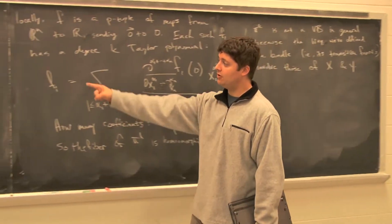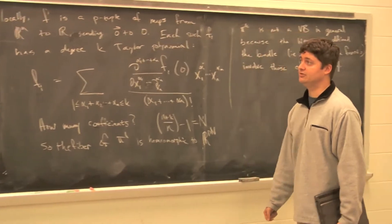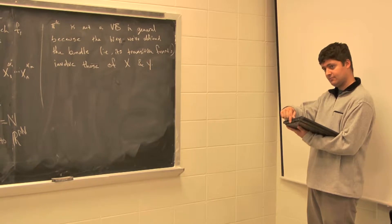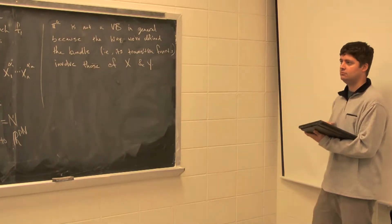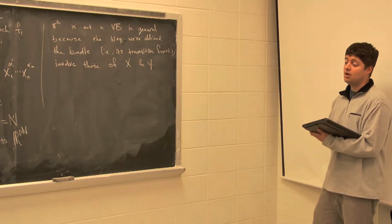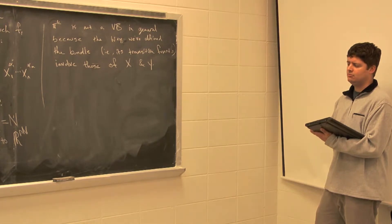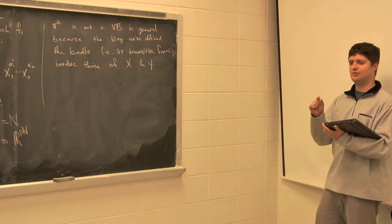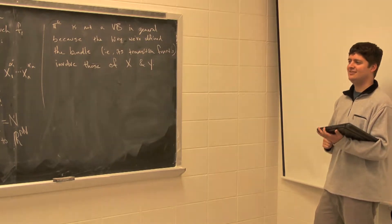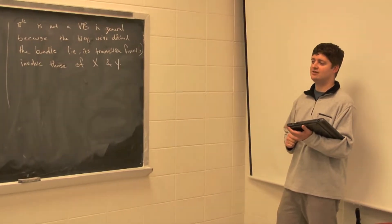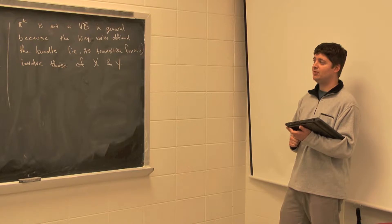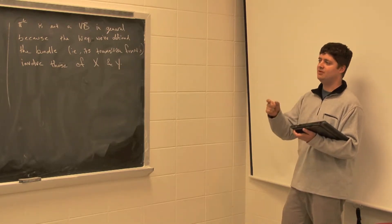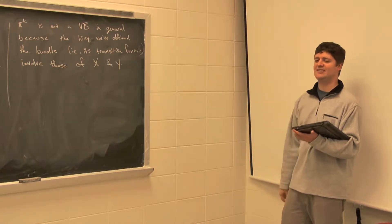But if X and Y were R^n, then you do get a vector bundle structure. Or even like PL or something? I suppose so. Well, what about at the place at the corners? Maybe there's a type of generalization of vector bundles, but yeah, I'm not going to get into that.